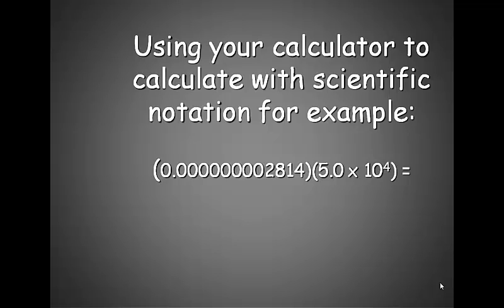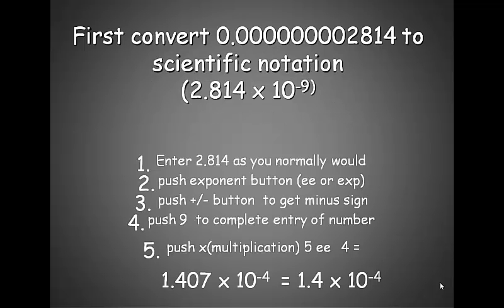Using your calculator to calculate with scientific notation is very easy. For example, if you took 0.00000000002814 and multiplied that times 5.0 times 10 to the 4th, you would get 1.4 times 10 to the negative 4th. The easy way to do this is to first convert the 0.000000002814 to scientific notation, or 2.814 times 10 to the negative 9th.